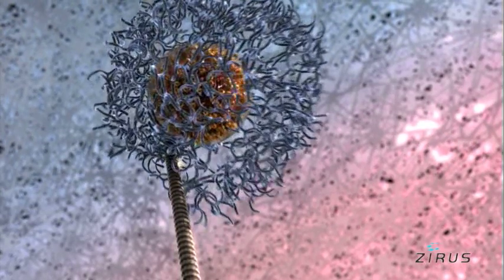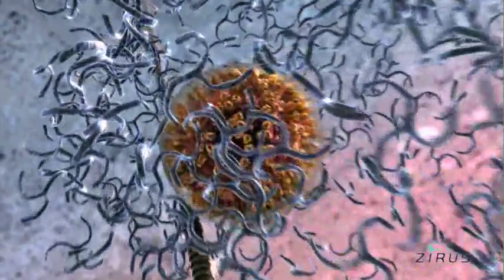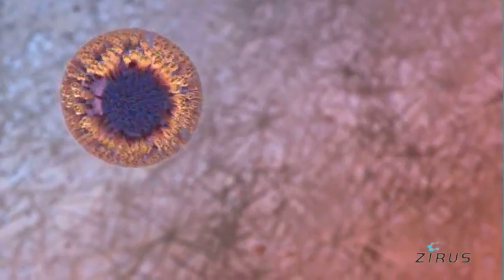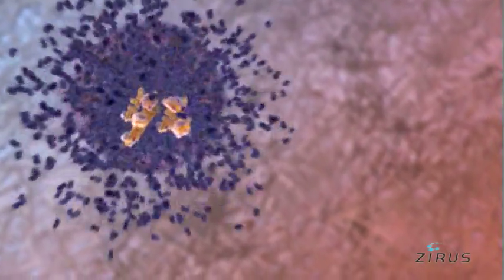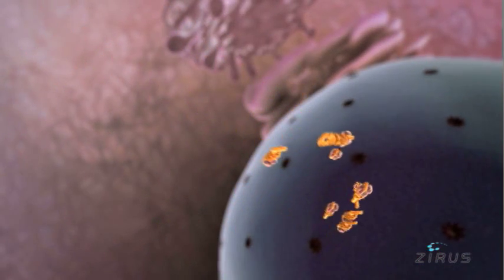During transport, the membrane of the vesicle fuses with the membrane of the virus and the capsid undergoes uncoating. The viral core RNA and proteins are then released into the cytoplasm, where they are guided by host proteins to the nucleus of the host cell.